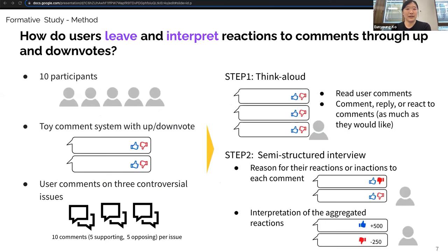To understand how users leave and interpret reactions to up-down votes, we conducted a formative study with 10 participants. We prepared a toy comment system with up-down votes and prepared user comments on three controversial issues. In each session, participants were asked to think aloud as they read user comments on social issues. Participants were able to comment, reply, or react to comments as much as they would like to. After the think-aloud session, we conducted a semi-structured interview and asked about reasons for their reaction or inaction to each comment and their interpretation of aggregated reactions.